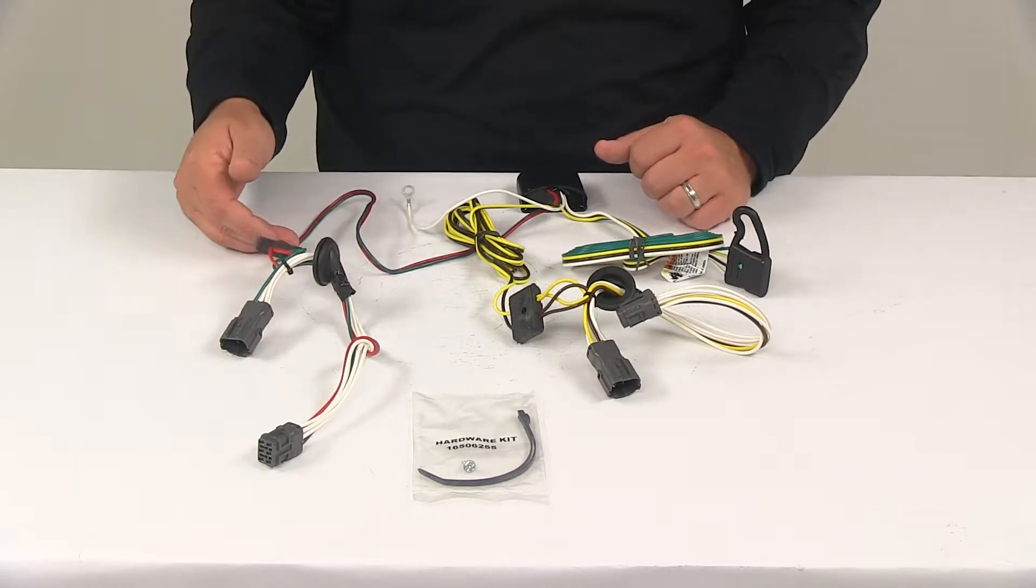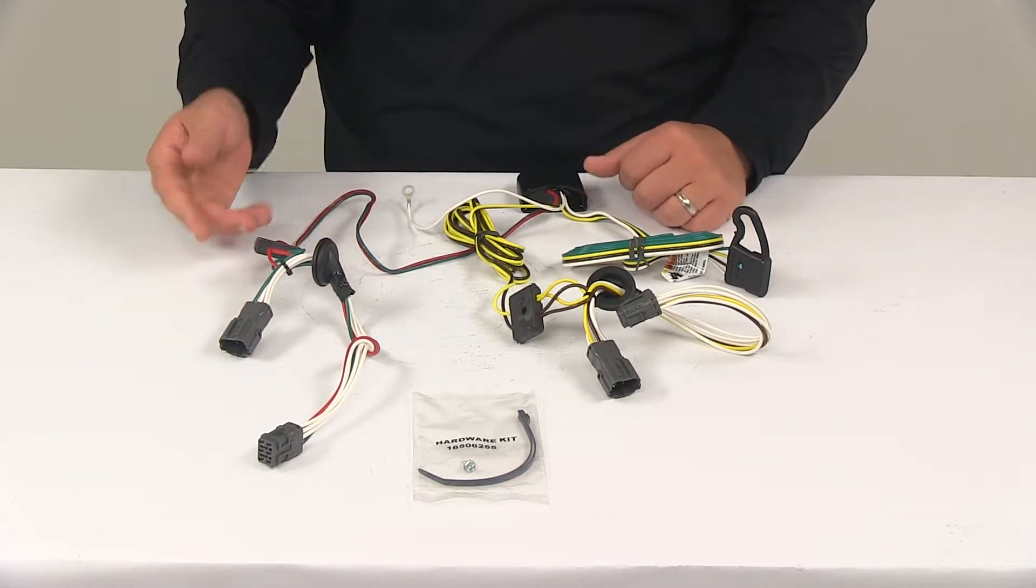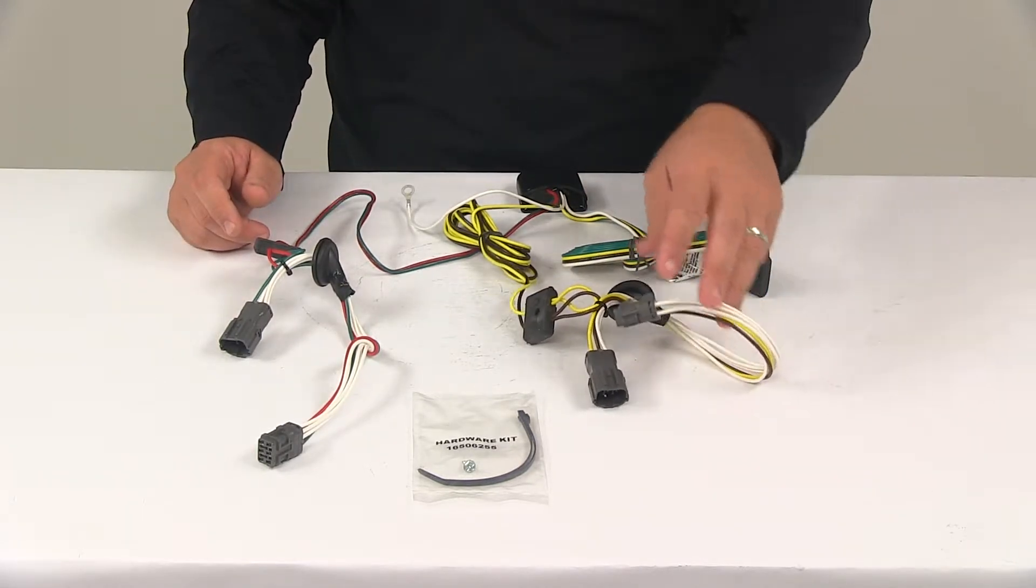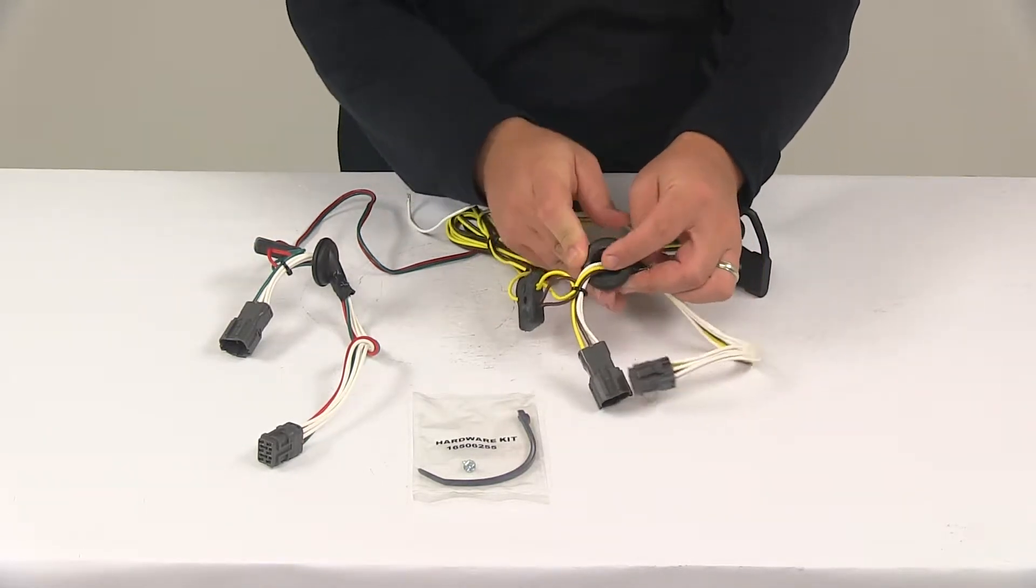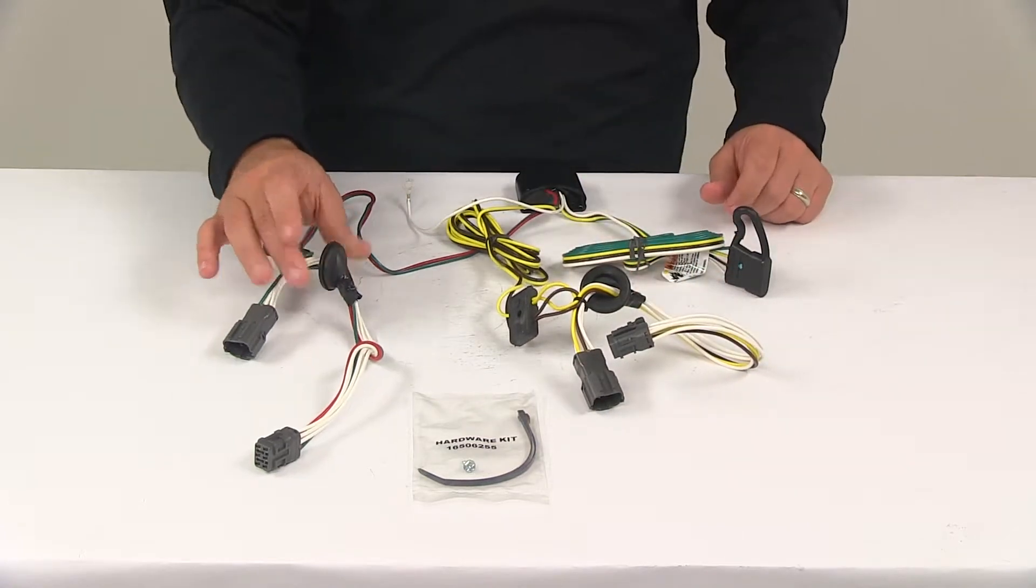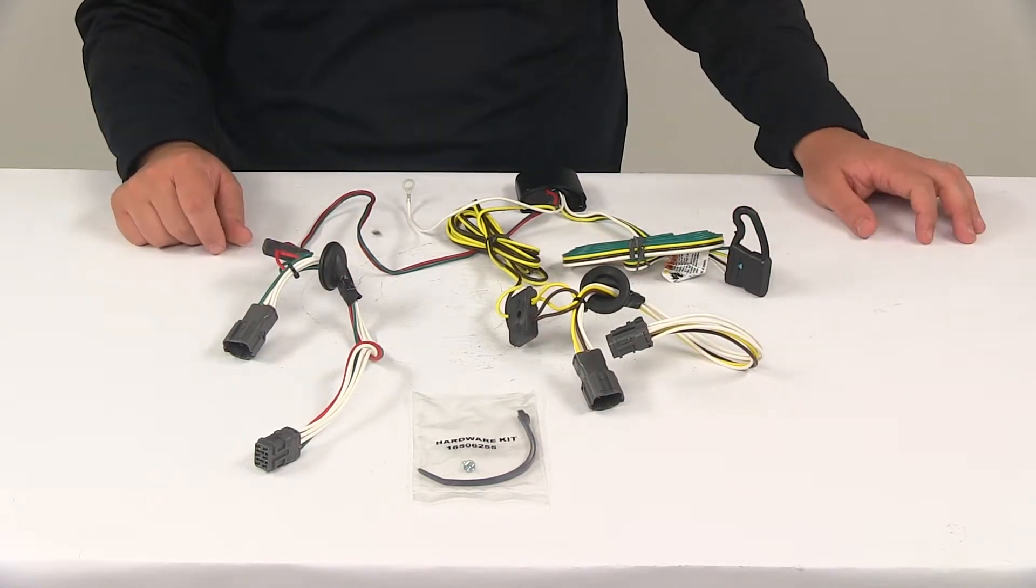The connector with the red and green wiring is going to go to the passenger side. The connector with the yellow and brown wiring is going to go to the driver's side of the vehicle. It does come with the included grommets to cover up the holes that your wiring is going to pass through for a nice water-tight connection.